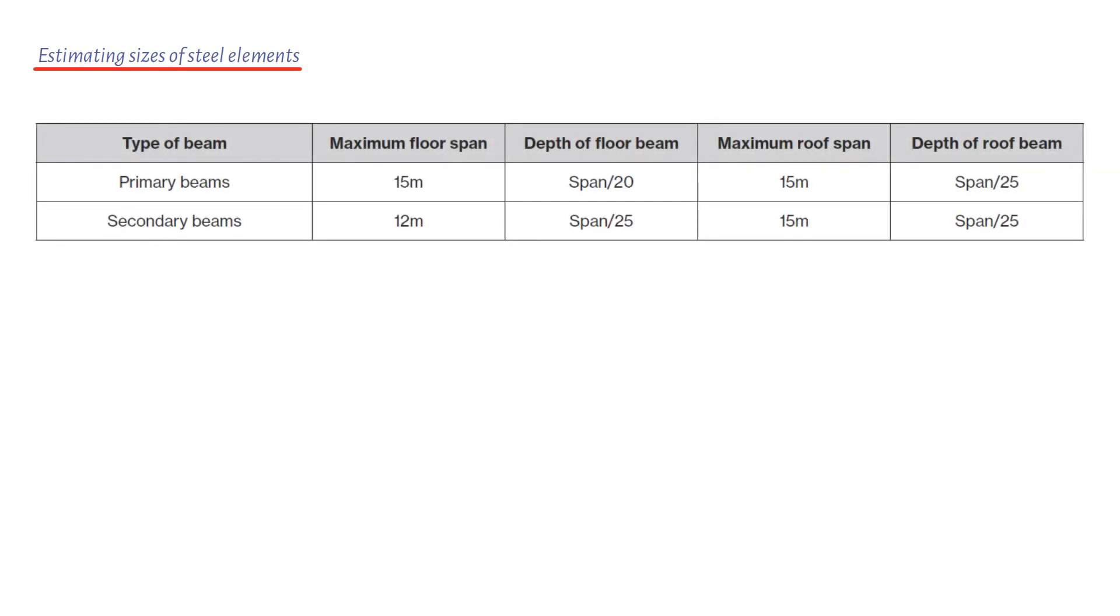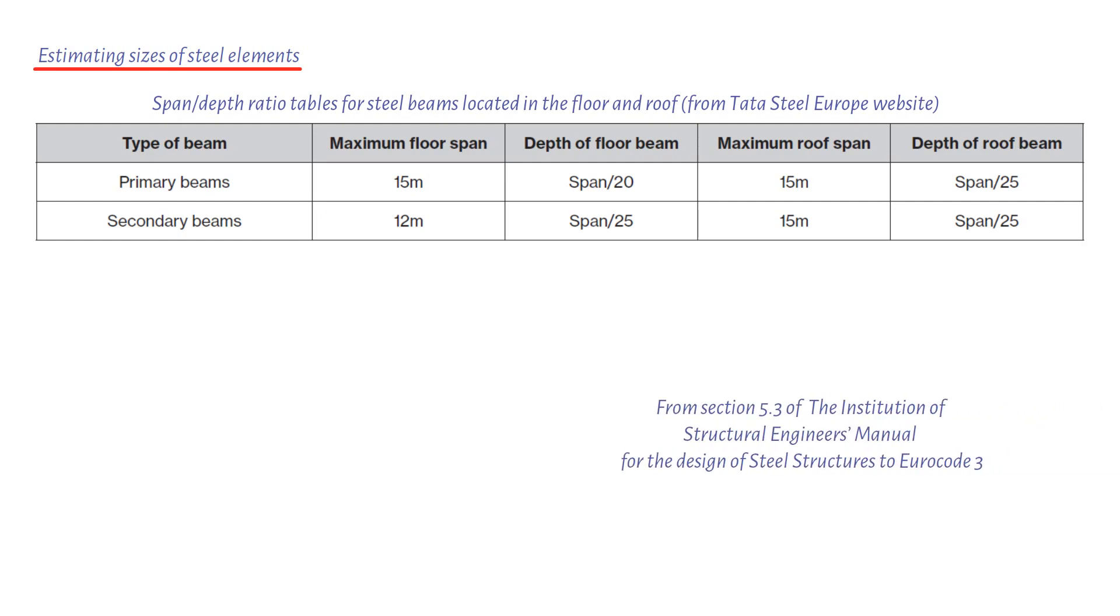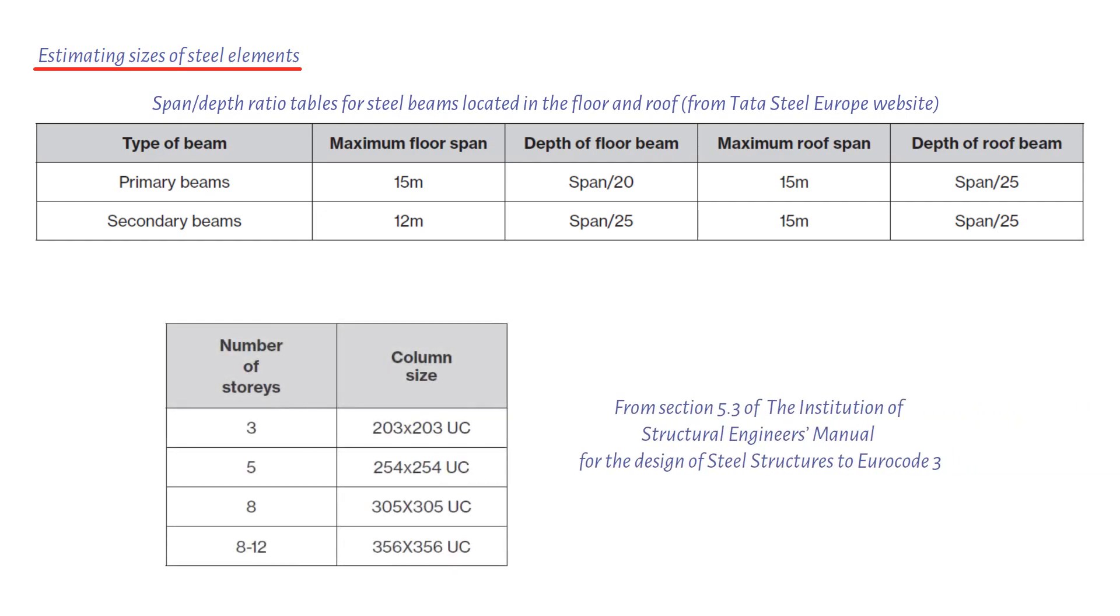It is thanks to this that the rules of thumb for steel beams can be summarized into the following table. With regard to columns, their size is dependent on the number of stories they have to support, from which an initial size can be established. The following table is a rough guide to column sizes based on the height of structure they are supporting for braced structures.